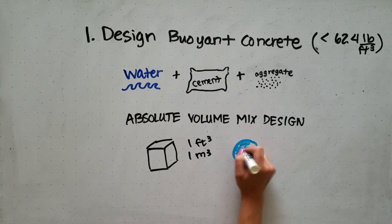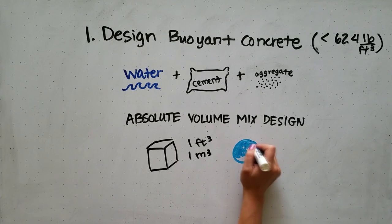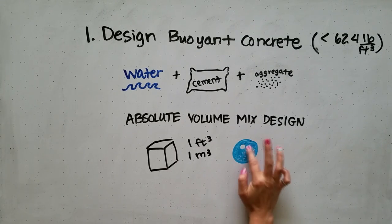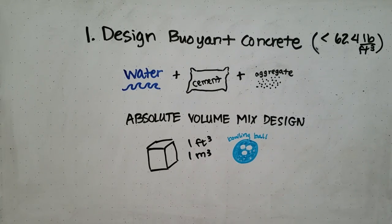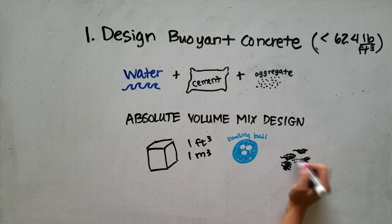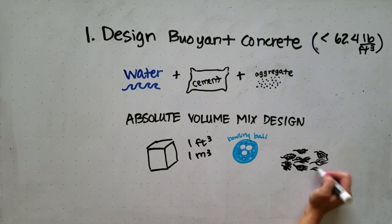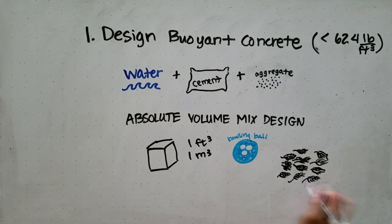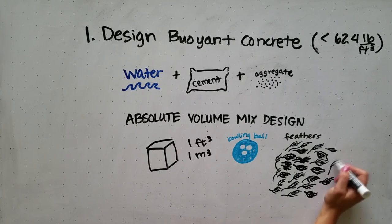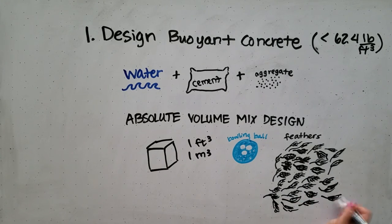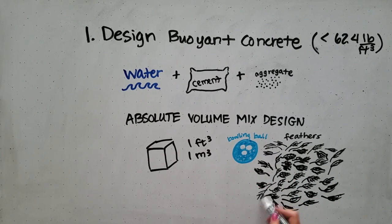For example, a 10 pound bowling ball does not have the same volume as 10 pounds of feathers. A bowling ball takes up much less volume because it is more dense. The same thing happens when we use lightweight aggregates or any lightweight components in our mix design — they take up a much larger volume for the same overall weight.